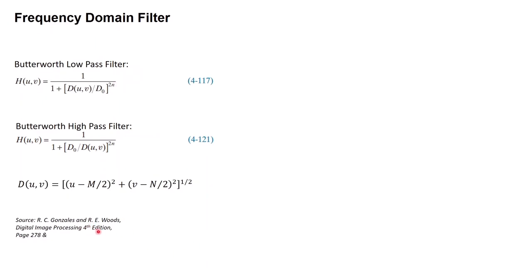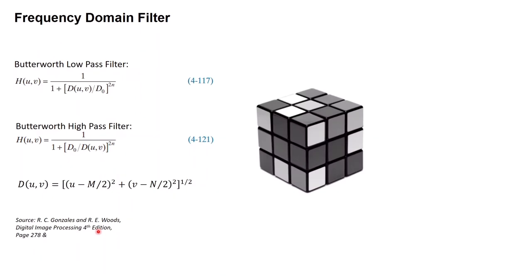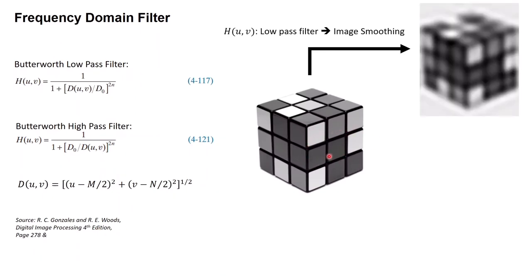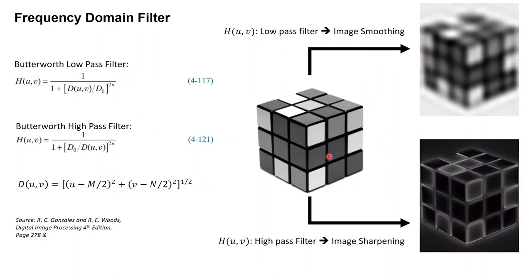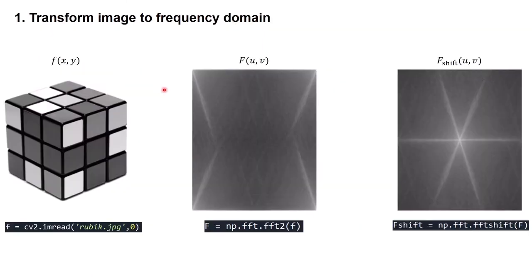Here I have a Rubik's cube image. If we apply a Butterworth low pass filter we will get a smoothed image, and if we apply a Butterworth high pass filter we will end up with a sharper image.